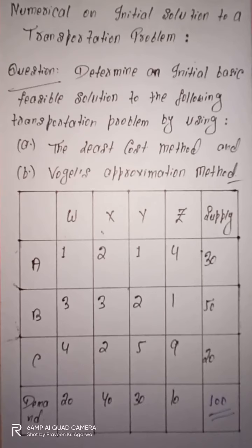This transportation problem has destination centers W, X, Y, Z and source centers A, B, C. The cost per unit distribution is given, along with the total supply at each source center and the total demand at each destination center.